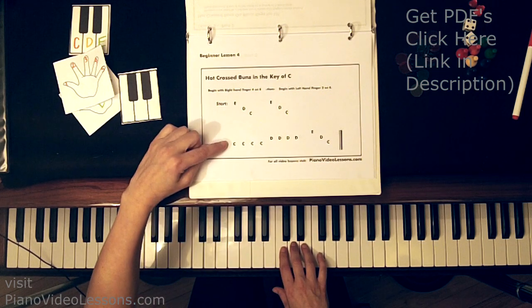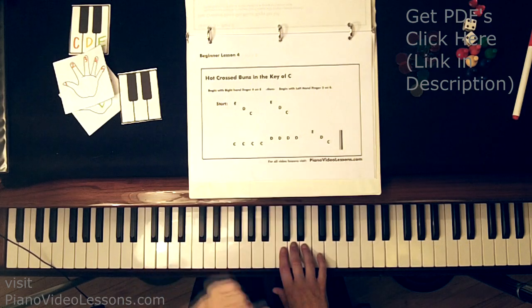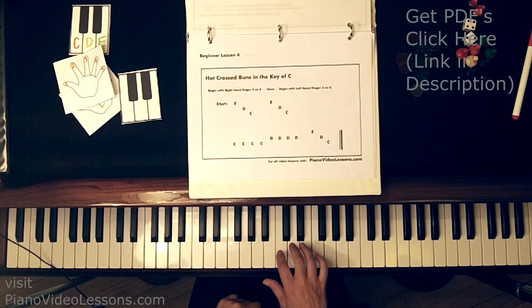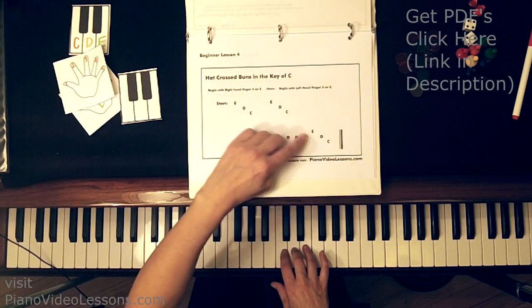And the next line has 4 C's, 4 D's, and then the pattern again. So here we go, 4 C's, 1, 2, 3, 4, now 4 D's, 1, 2, 3, 4, and then E, D, C.